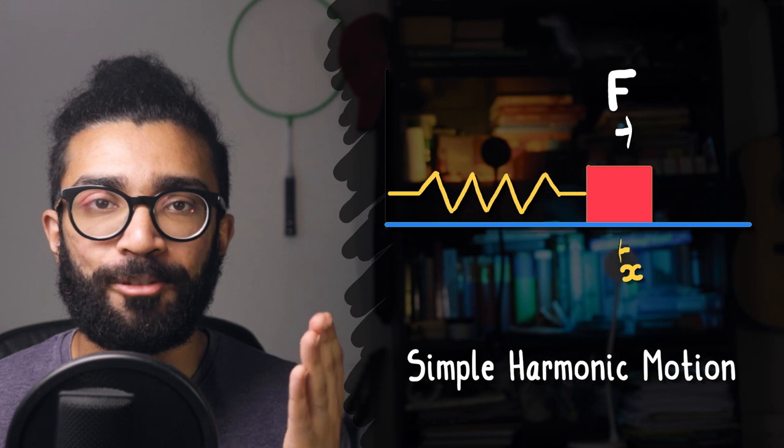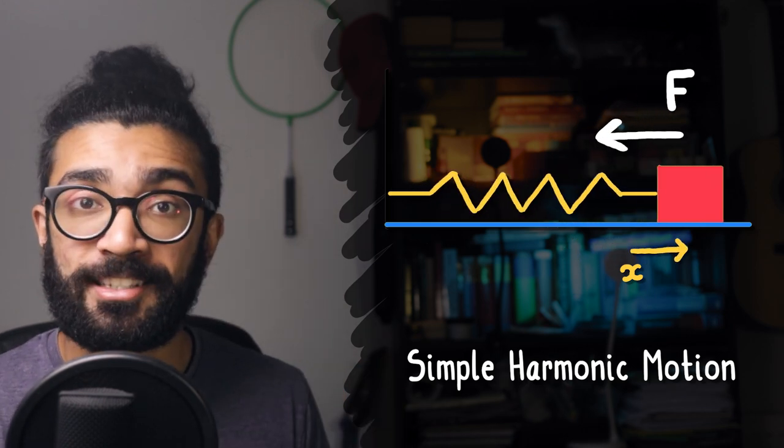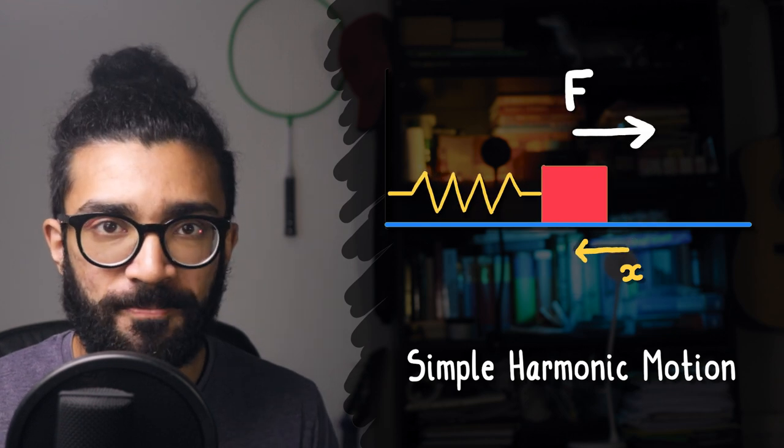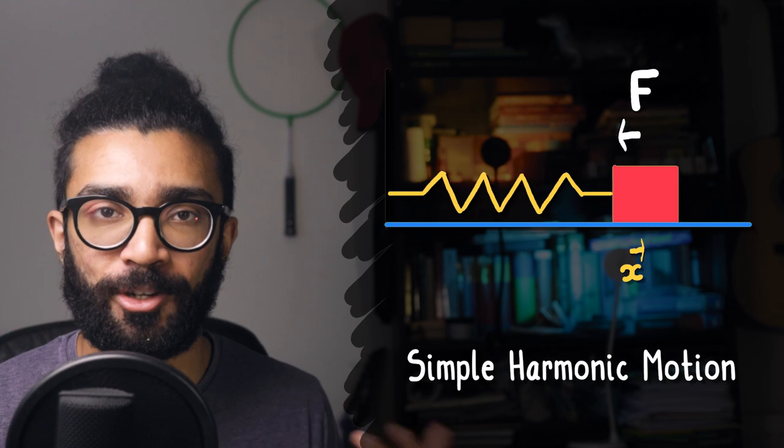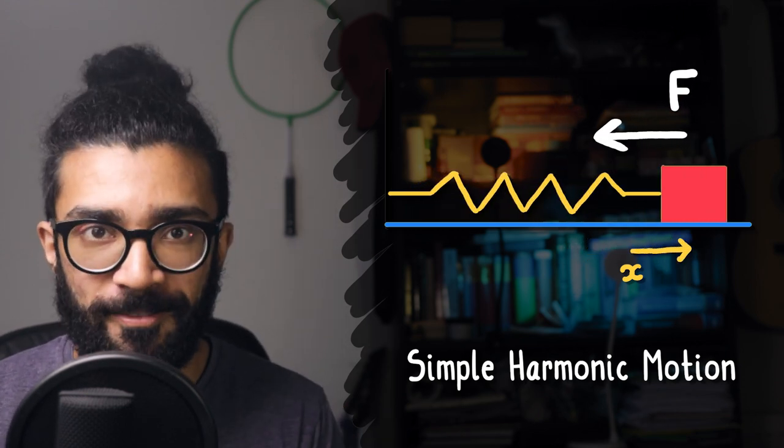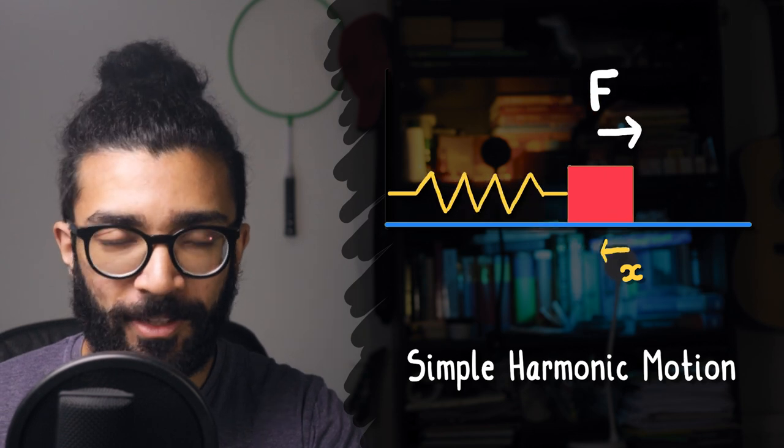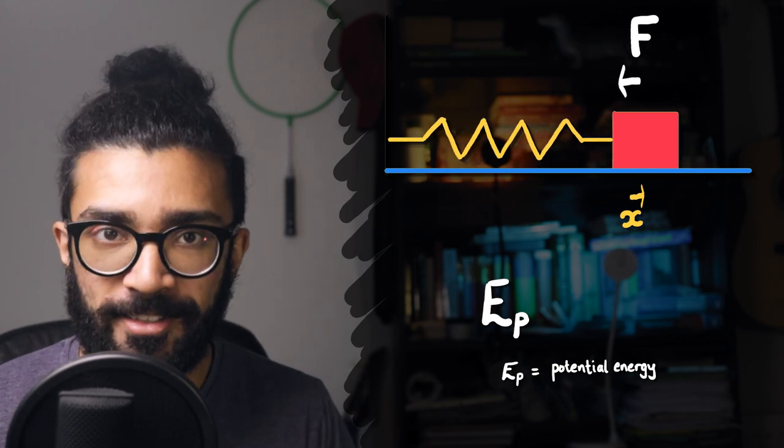And we've just mentioned another important characteristic here. The force has to be acting in the opposite direction to the displacement. Now the spring mass system indeed does display the characteristics we've mentioned so far, which is why we say it's undergoing simple harmonic motion specifically. But now let's move forward a little bit, let's think about the potential energy stored in the spring as it compresses and extends.